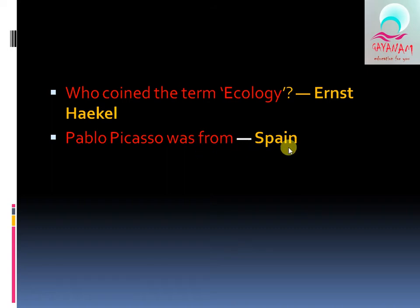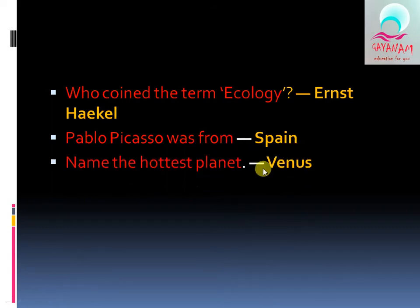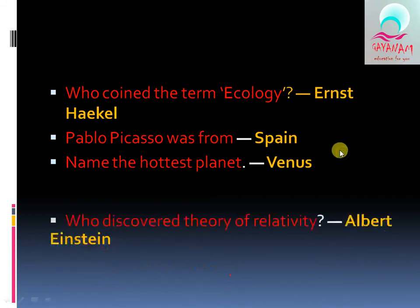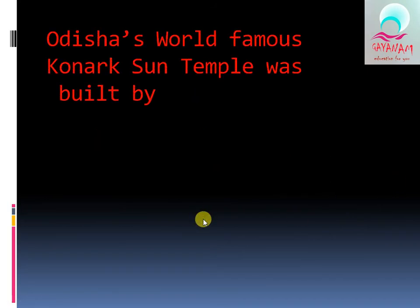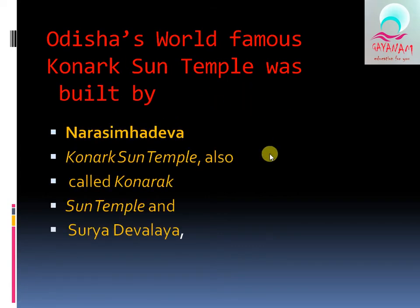Pablo Picasso was from Spain. The name of this planet is Venus — this is a most important question. Who discovered the theory of relativity? It is Albert Einstein. The world-famous Konark Sun Temple was built by Narasimhadeva.